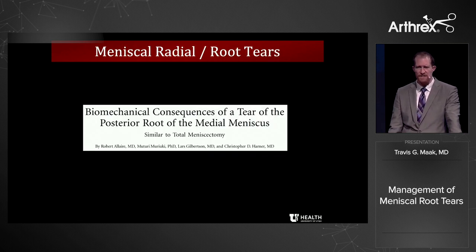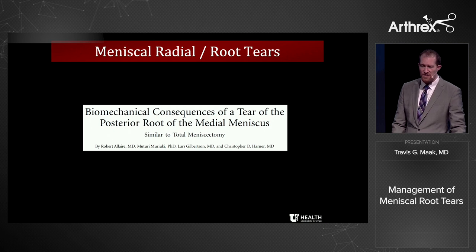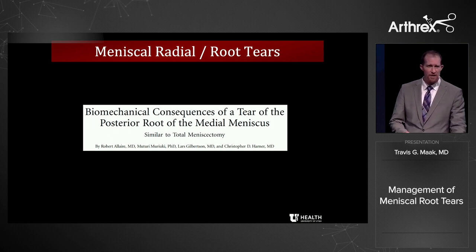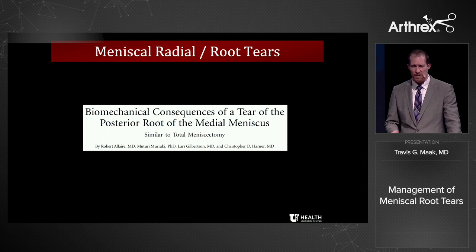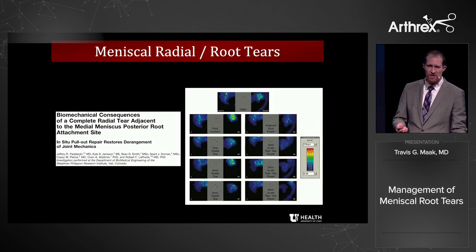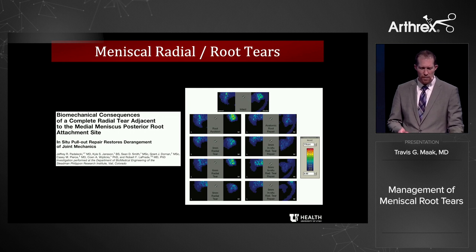What are the consequences of a root tear? The consequences are significant, especially in the medial meniscus — particularly in an individual who has genu varum and overload on the medial compartment. They're very dependent on their medial meniscus, and a root tear on the medial side that's not fixed is a disaster for them.